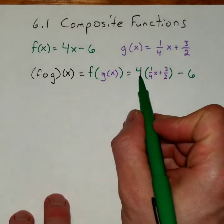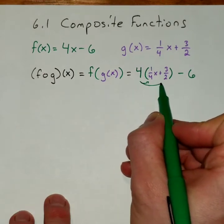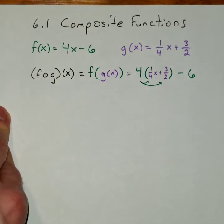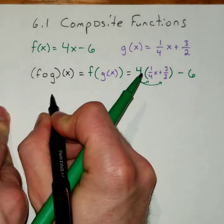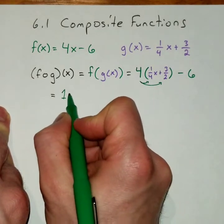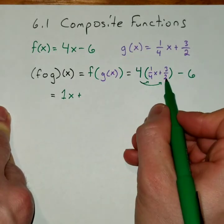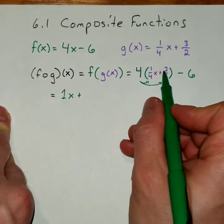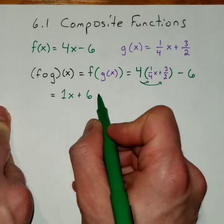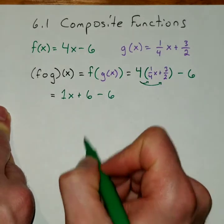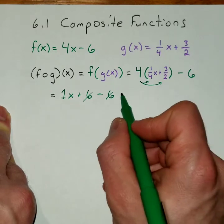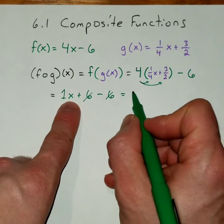Then we're going to distribute this 4 into the parentheses. Now 4 times ¼ is 1, so this is going to equal 1x plus 4 times 3/2. Well, 4 times 3 is 12, divided by 2 is 6, so that gives me a 6. Then I'm also still subtracting that 6. Now these two 6's add up to 0 — negative 6, positive 6 — and the final answer is 1x, which really is just x.